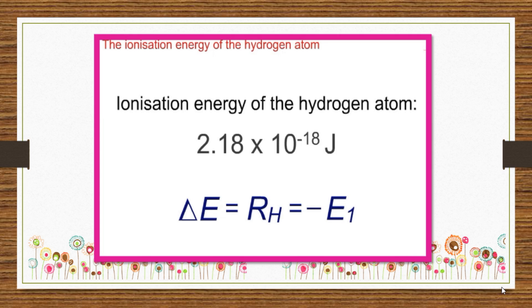Notice that the ionization energy is the same as the Rh constant and is equal to the ground state energy but with the opposite sign.